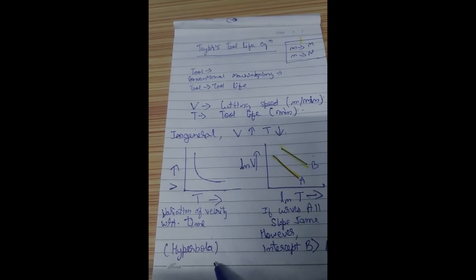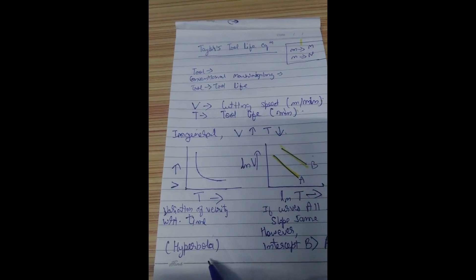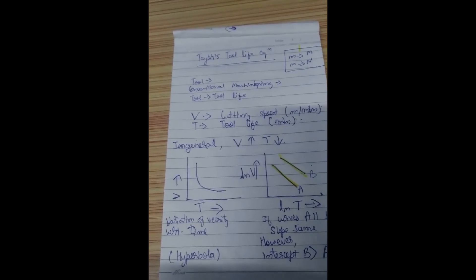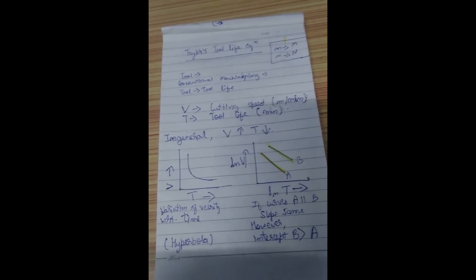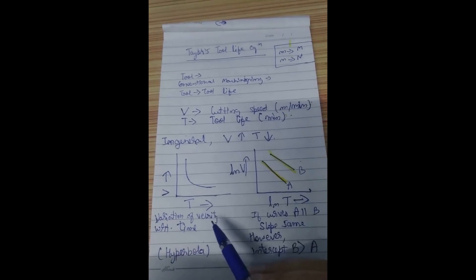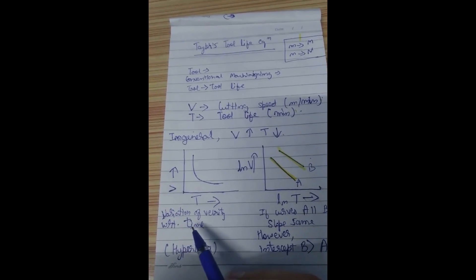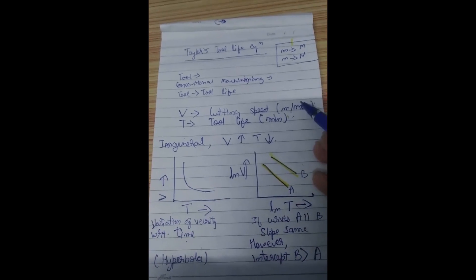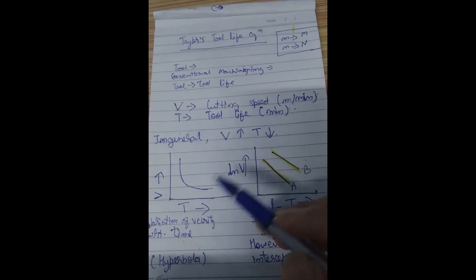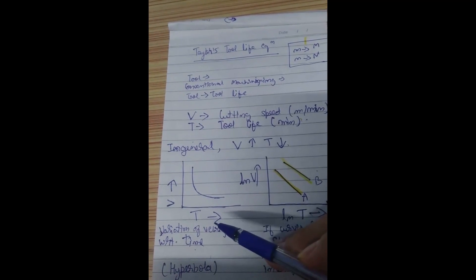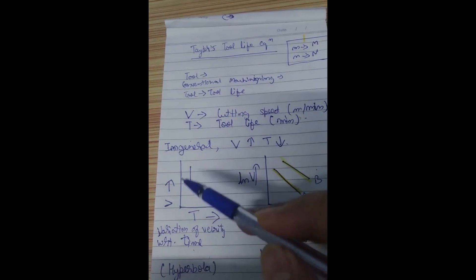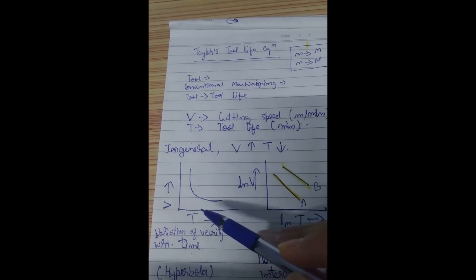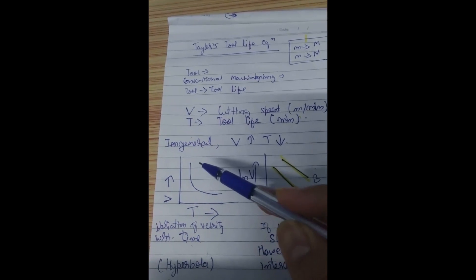So basically we are having a hyperbola, we are having a hyperbolic variation. That is the variation of the velocity with respect to the tool life time. I have obviously previously defined the units also. So when we decrease the cutting speed the tool life will increase. So hyperbolic variation.